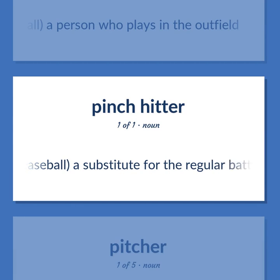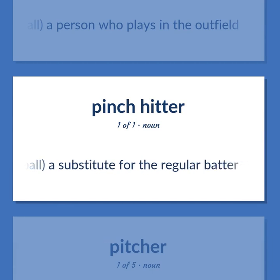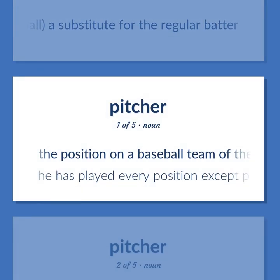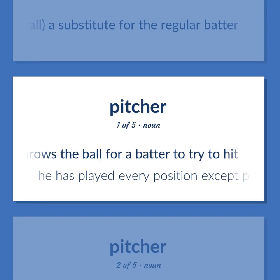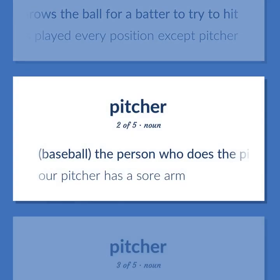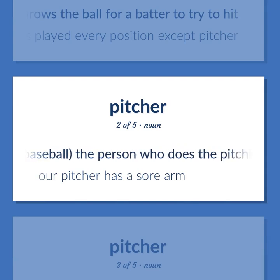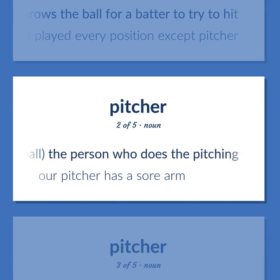Pinch hitter: Baseball — a substitute for the regular batter. Pitcher: The position on a baseball team of the player who throws the ball for a batter to try to hit. Example: He has played every position except pitcher. Example: Our pitcher has a sore arm.